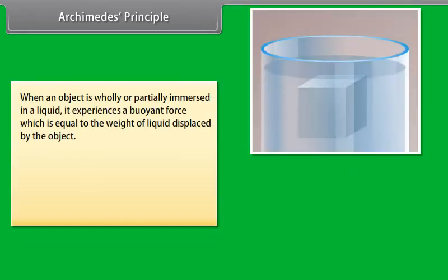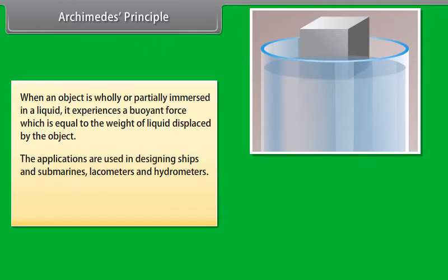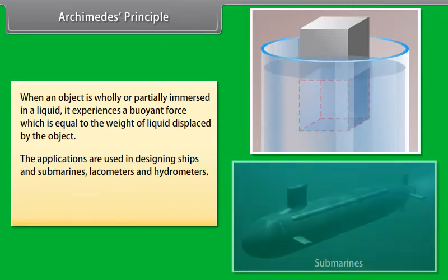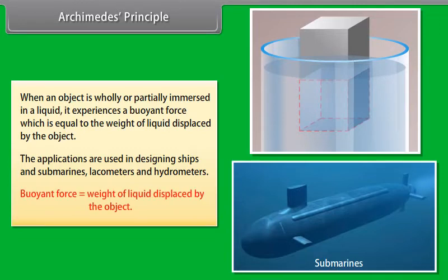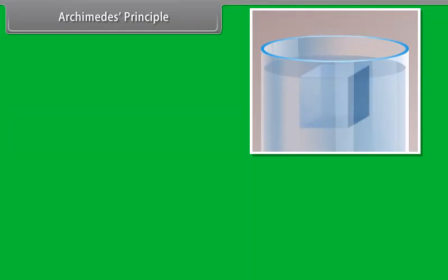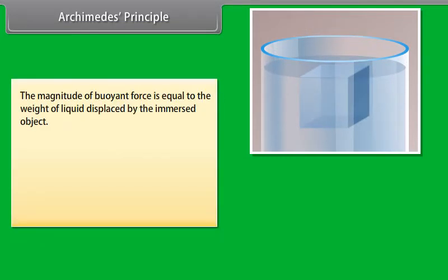Archimedes' principle: when an object is wholly or partially immersed in a liquid, it experiences a buoyant force which is equal to the weight of liquid displaced by the object. The applications include designing ships and submarines, lactometers, and hydrometers. The magnitude of buoyant force is equal to the weight of liquid displaced by the immersed object.